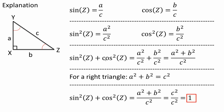We're trying to prove that sine squared Z plus cosine squared Z is equal to 1. Substituting, sine squared Z equals A squared over C squared, and cosine squared Z equals B squared over C squared, so I get A squared over C squared plus B squared over C squared.